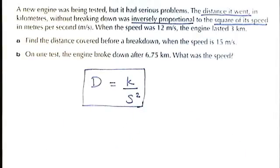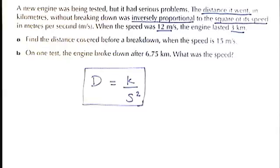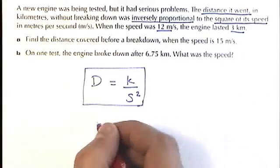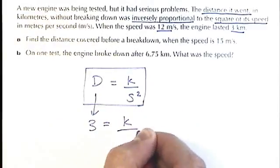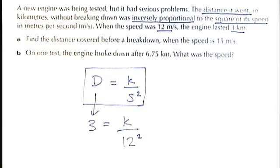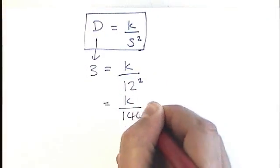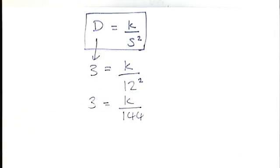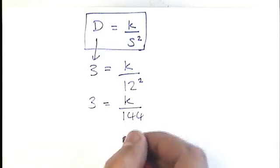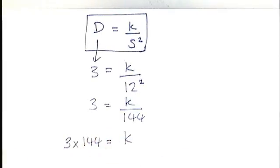Now what I'm going to do is just try and plug in two numbers from the question. I know that when the speed is 12, the engine lasted 3 kilometers. So the distance is 3 kilometers when the speed was 12. So all I've done there is substituted 3 and 12 in. Once again, I can work out the value of K from that point. I'm just going to work out that 12 squared is 144. And then I need to do 3 times 144 to work out my value of K. That's 432.